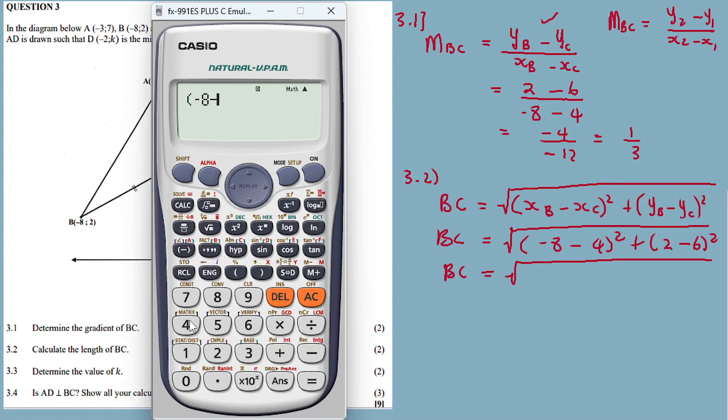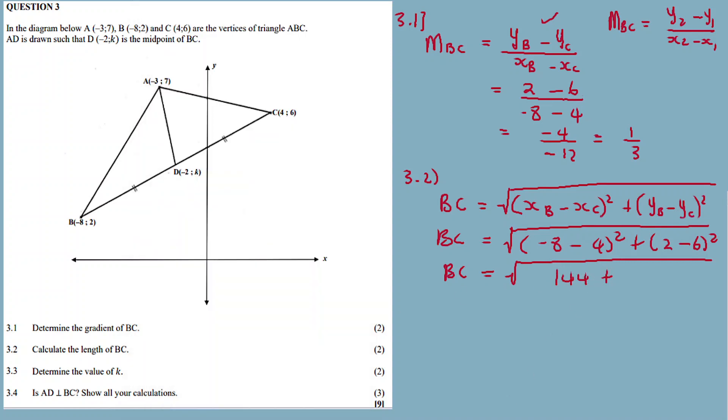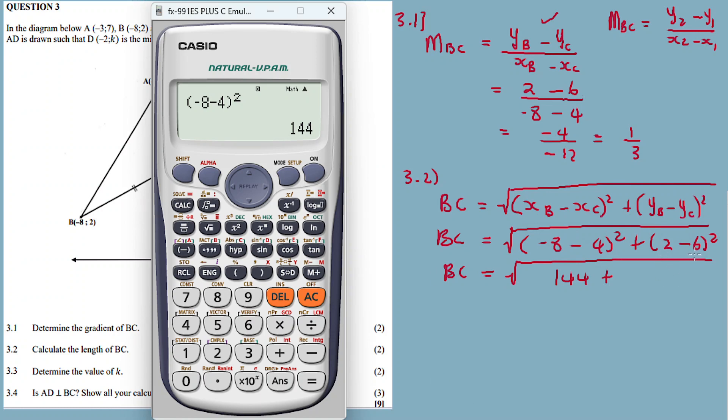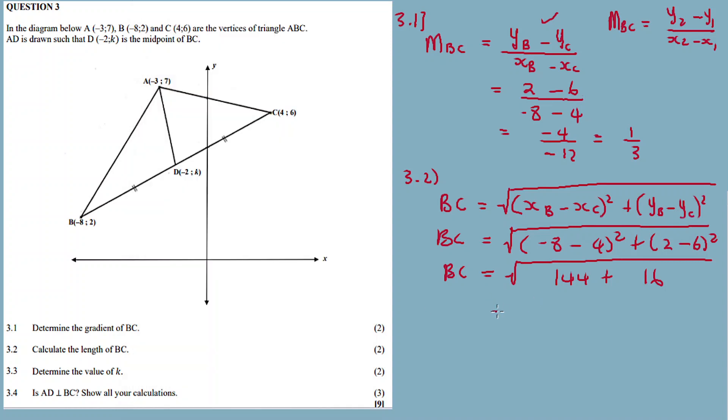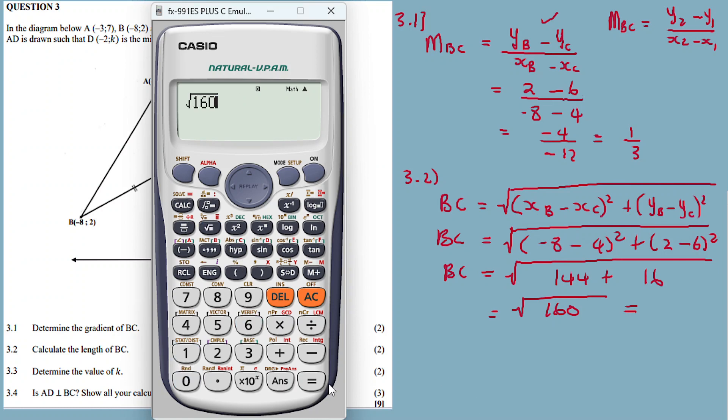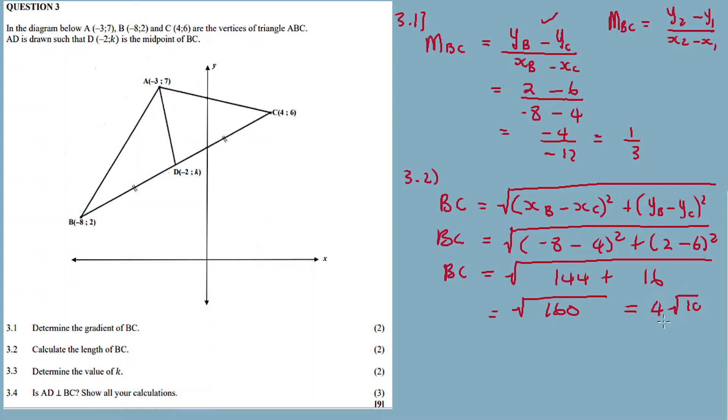Negative 8 minus 4 squared. Plus, 2 minus 6 is minus 4. Minus 4 squared is 16. Plus 144, the answer is 160. So the answer is square root of 160, which equals 4 square root 10. Your answer is done.